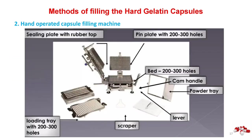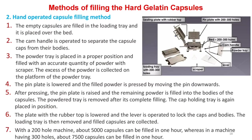Hand-operated capsule filling machine method: The empty capsules are filled in the loading tray and placed over the bed. The cam handle is operated to separate the capsule caps from their bodies. The powder tray is placed in proper position and filled with an accurate quantity of powder using a scraper; excess powder is collected on the platform of the powder tray. The pin plate is lowered and the filled powder is pressed by moving the pin downwards. After pressing, the pin plate is raised and the remaining powder is filled into the bodies of the capsules. The powdered tray is removed after complete filling. The cap holding tray is again placed in position. The plate with the rubber top is lowered and the lever is operated to lock the caps and bodies. The loading tray is then removed and filled capsules are collected.